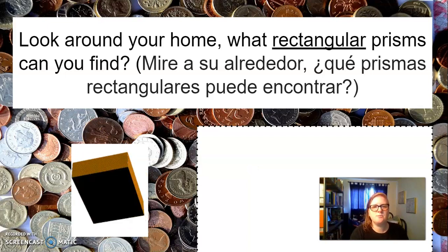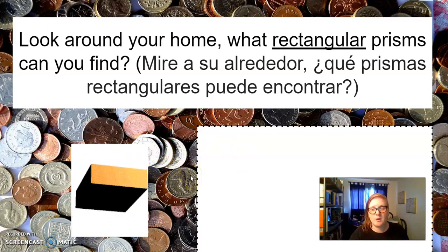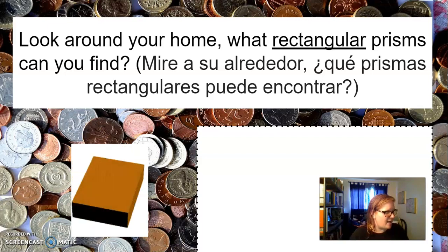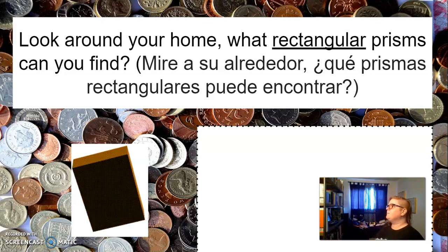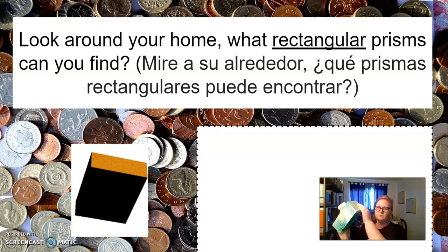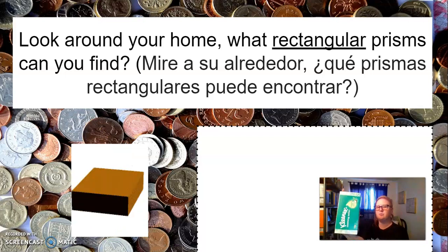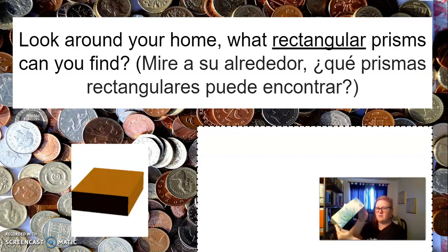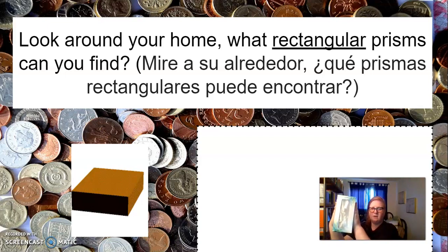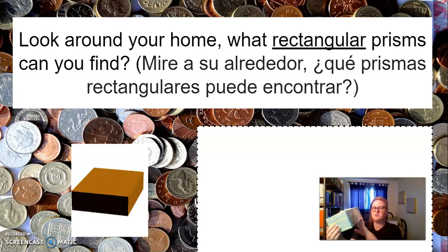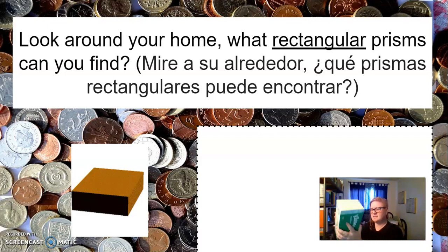Look around your home. What rectangular prisms can you find? Remember, I'm talking about a rectangular prism, not a triangular prism or anything like that. Right here — this is a tissue box, and it is a rectangular prism, especially when you don't really see the tissue popping out of it. It is a three-dimensional rectangle. I could choose that the two bases be these two right here, or these two right here, or these two right here, as long as they are opposite each other. We've got two square faces that are the same size, and these faces all around, when they're opposite each other, are also the same size.